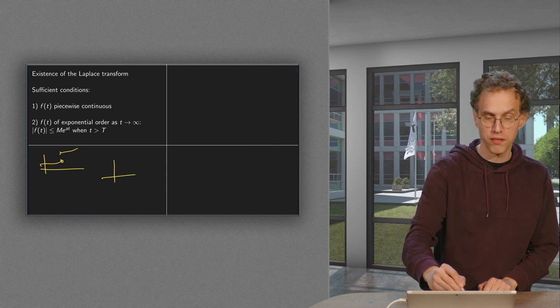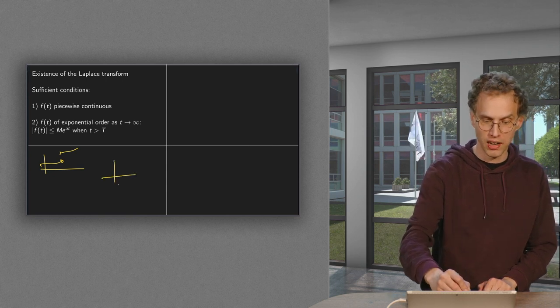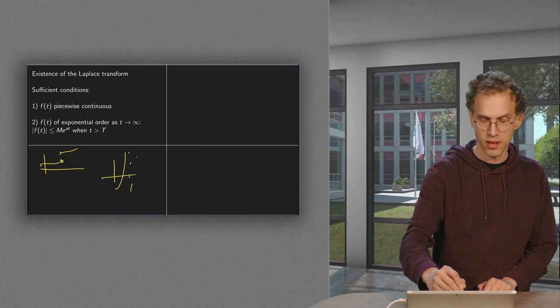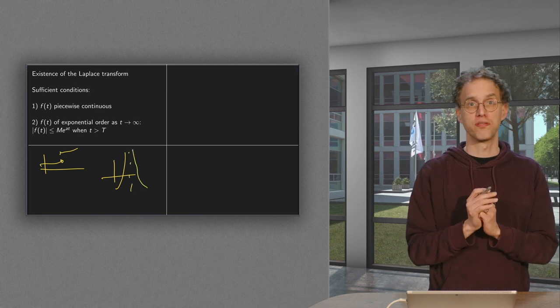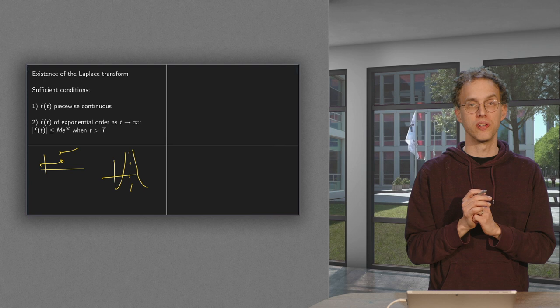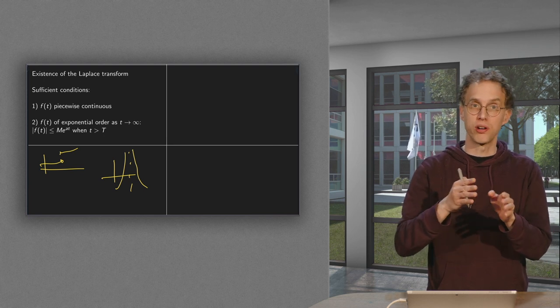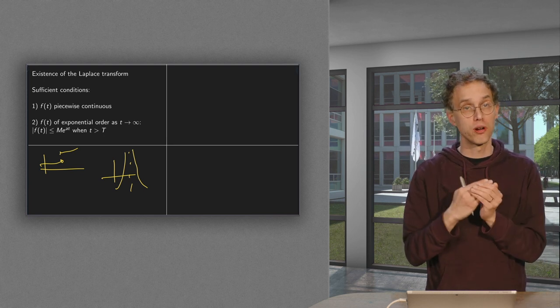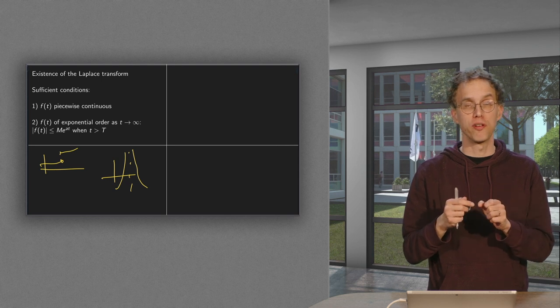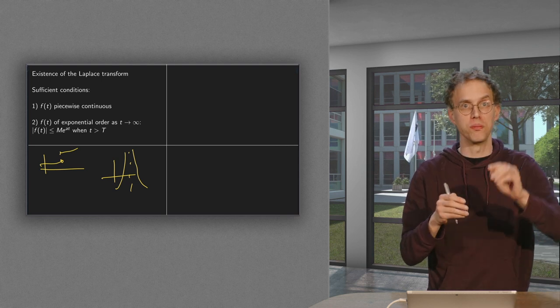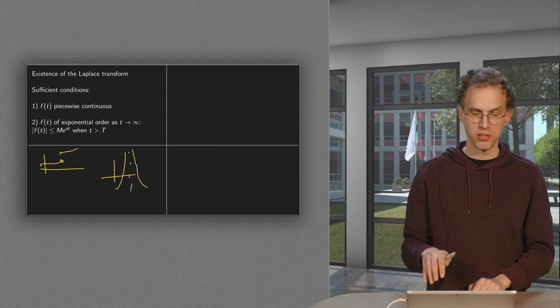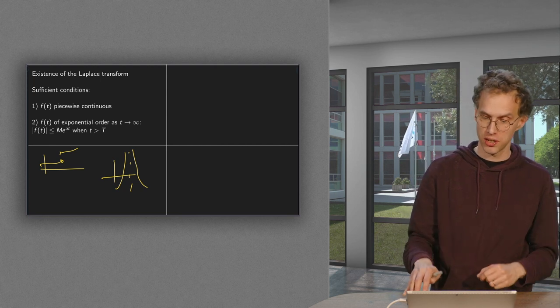However, if you make large jumps, if you have like an asymptote, something like this, that's not fine. Then you're not piecewise continuous anymore. Piecewise continuous, then you're continuous except for a couple of points. And on those couple of points, you only may make a finite jump and not such a vertical asymptote. So that's the piecewise continuity.